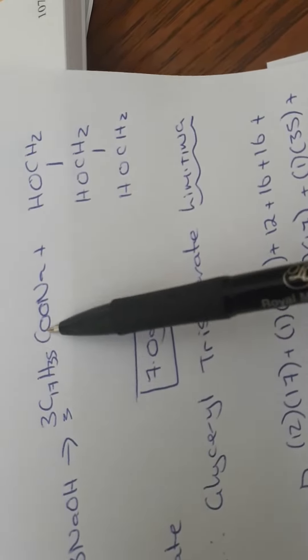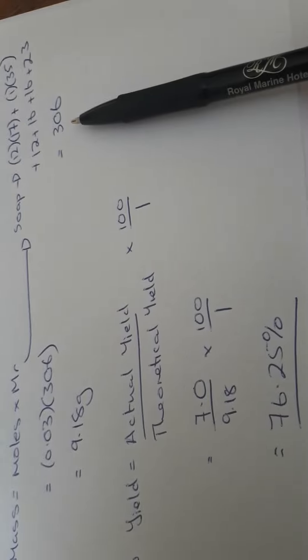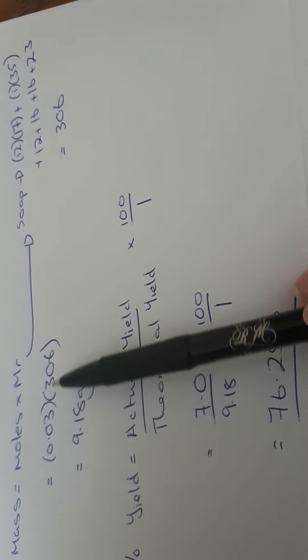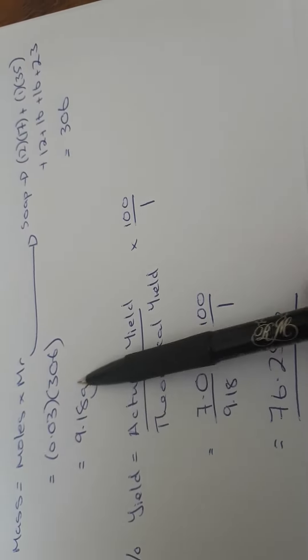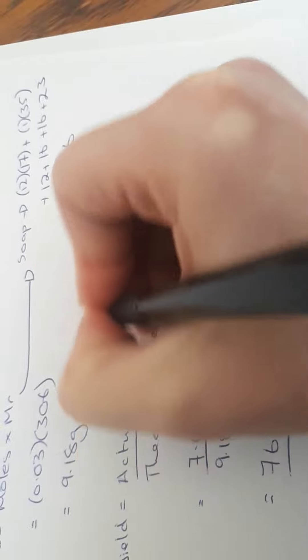So 12 by 17 plus 1 by 35 plus 12 plus 16 plus 16 plus 23, that gives me a total of 306. So 0.03 multiplied by 306 gives me 9.8 grams and this is my theoretical yield, so the amount I can have theoretically.